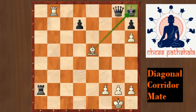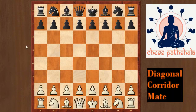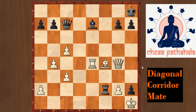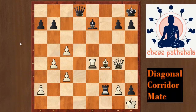Now let us learn more about diagonal corridor mate with the help of some examples. This is the game of Capablanca playing with the white pieces. White's last move was bishop to f4, attacking the queen on c7, and black played queen to d8. Capablanca found a very nice combination to finish off the game.